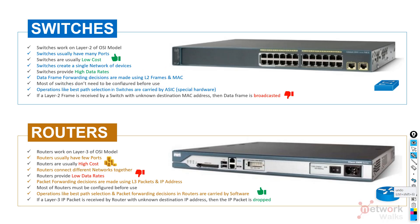Operations like best path selection in routers are carried out through software, which is why they are expensive and slower, but they perform many sophisticated jobs. In switches, these operations are handled by special hardware, making them faster for their specific tasks.